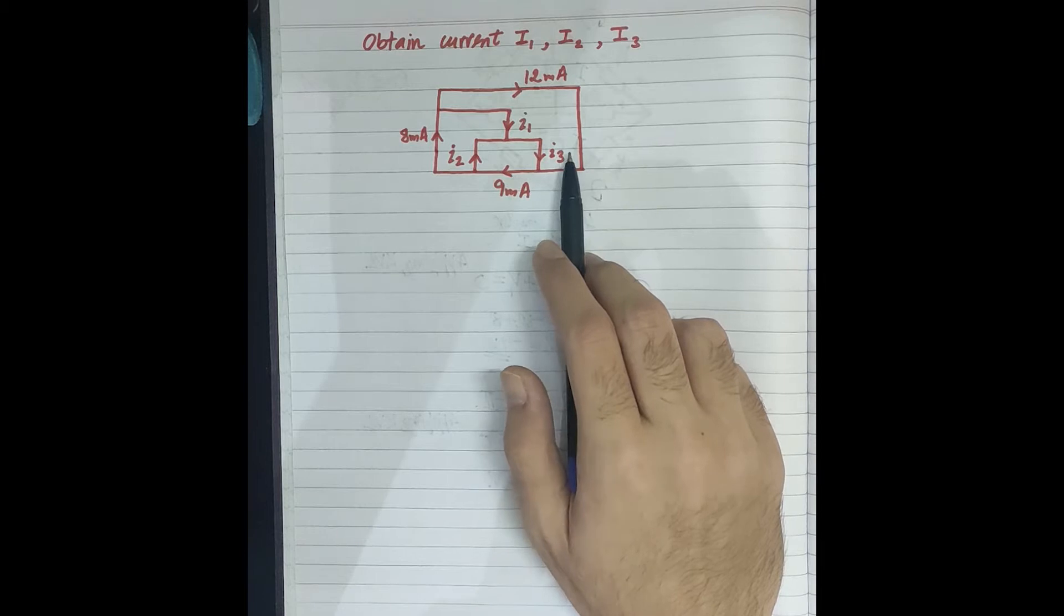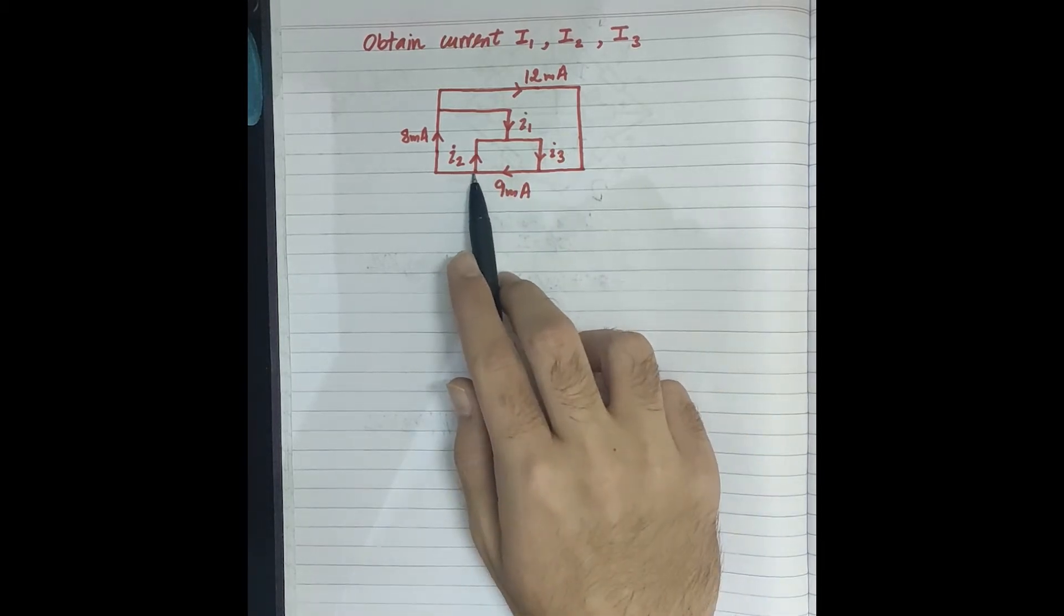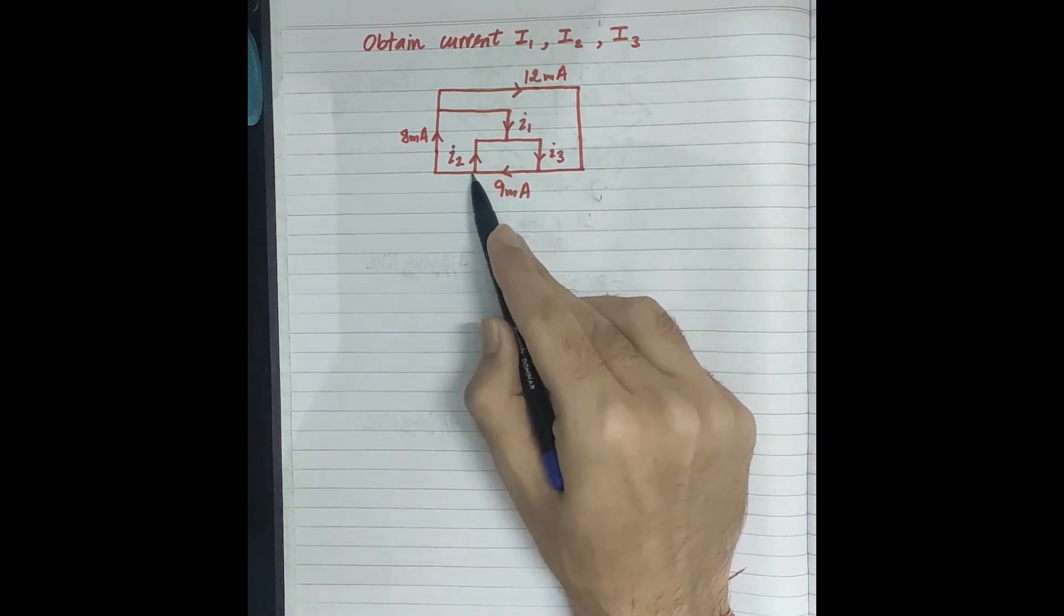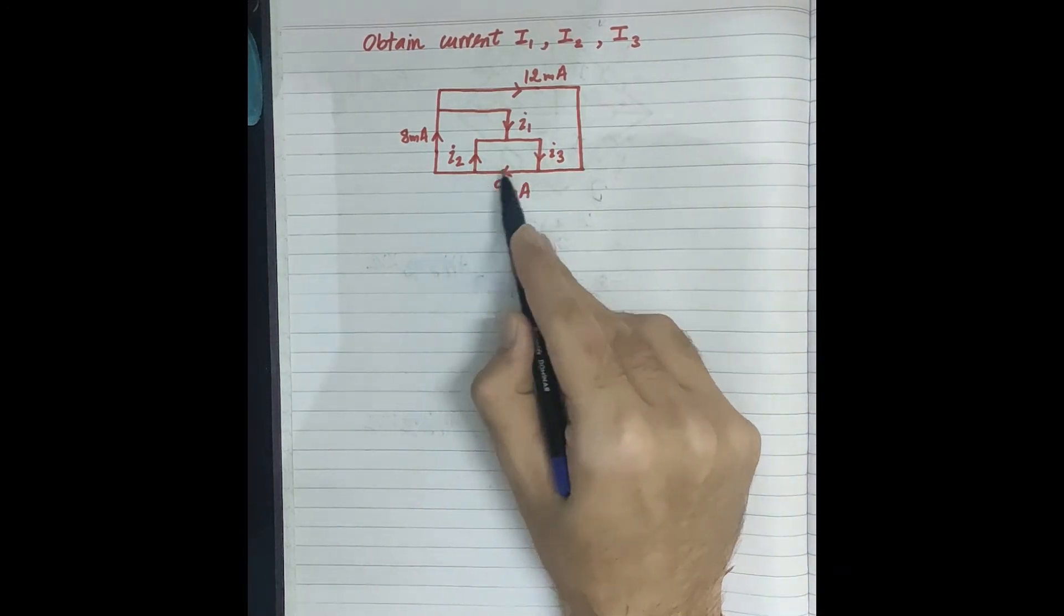First, let's consider this junction. We have learned that the incoming current equals the outgoing current. This junction exists because there are three wires meeting here.